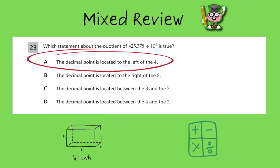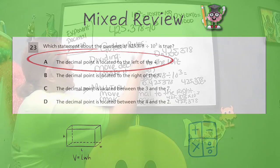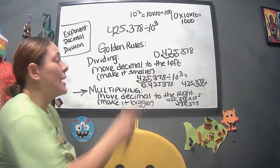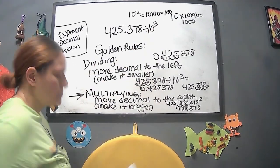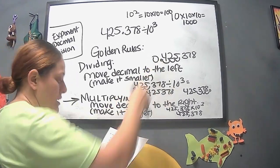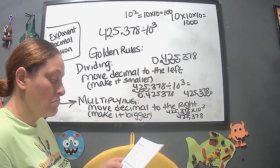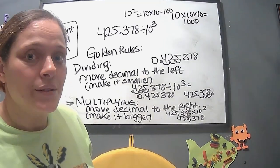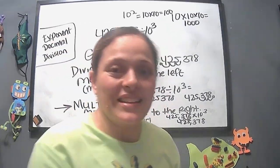It says a decimal point is located to the left of the 4. Well, let's see. We're dividing, right? By 10 to the 3rd. And when we do that, right? We divide it. It's to the left of the 4. That looks like that's the answer. So, off the bat, we got the right answer.